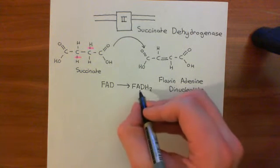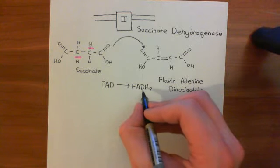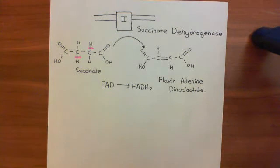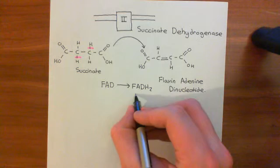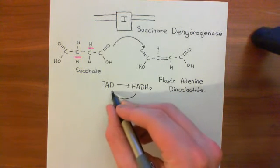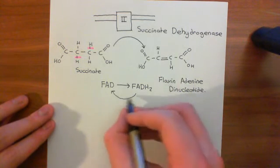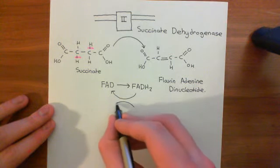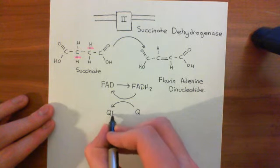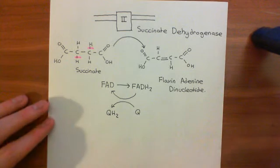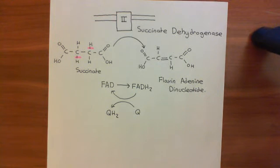Flavin adenine dinucleotide doesn't get to stay reduced very long. It's just a temporary holder of these two protons. It holds them until Complex 2 has time to give them to a molecule of ubiquinone. What will happen is it will go back to this, and in the process, you will take a ubiquinone molecule into a ubiquinol molecule, QH2, here. That's what Complex 2 does - it also gives protons to ubiquinone.